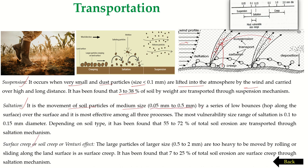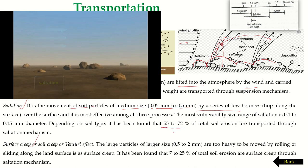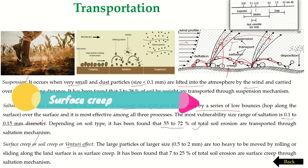In saltation, medium-sized particles ranging between 0.05 mm to 5 mm move by a series of low bounces along the surface. Saltation is the most effective among all three processes because a large amount of soil — 55 to 72 percent of total soil particles — is lost through saltation. The most vulnerable particle size range is 0.12 to 0.15 mm in diameter.